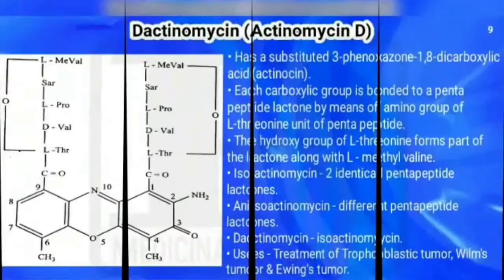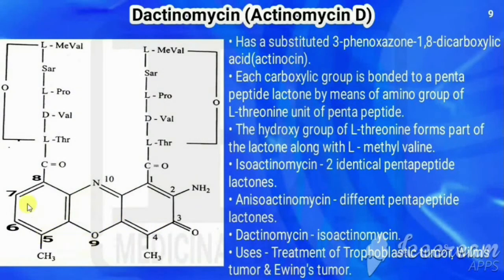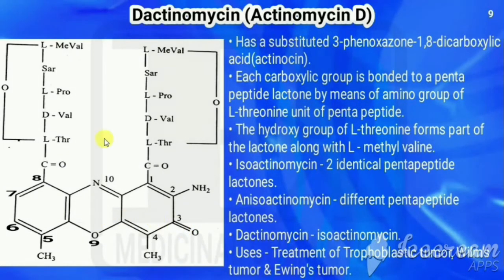Next is dactinomycin, otherwise called actinomycin D. This is the structure of dactinomycin. It is a fusion of three rings: the first is a phenyl ring, the second has oxygen and nitrogen making it an oxazine, and the third has a ketone. Together they are called phenoxosone. The numbering runs from one to ten, and the ketone is at the third position, giving the suffix '-one,' so it is called 3-phenoxosone. The first and eighth positions have carboxylic acid groups.